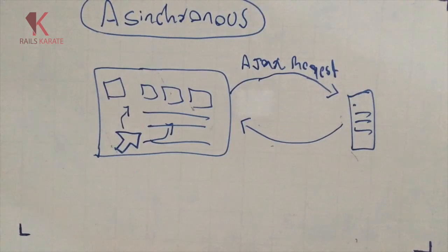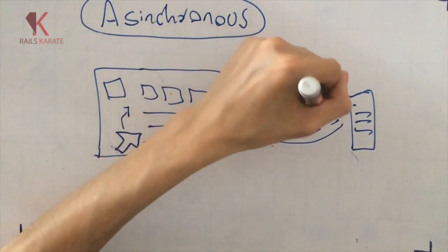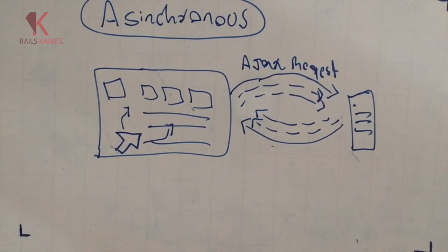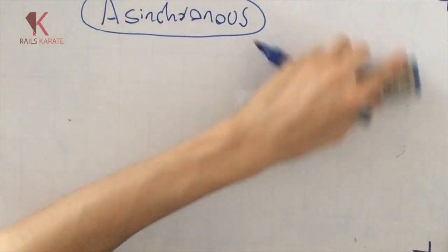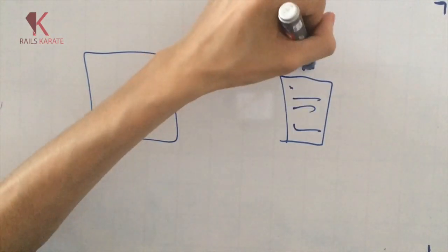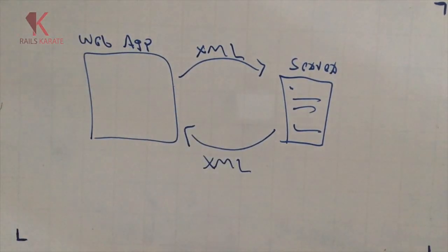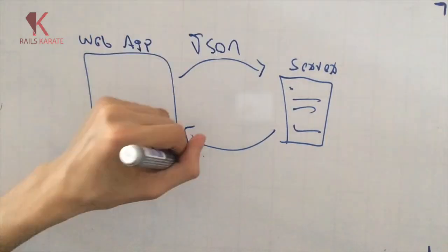Ajax allows us to send and receive data from the server using JavaScript. We can interact with the server in real time without the need to reload the page. The data sent in Ajax requests used to be formatted in XML - that's why the X in the name Ajax. However, now the format used for sending data is called JSON. We'll talk about it later.